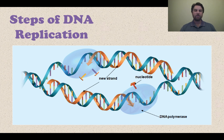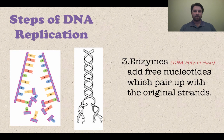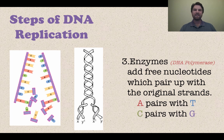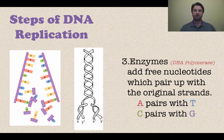Helicase unzips that double-stranded DNA. The next step is another enzyme called DNA polymerase, which is going to add free nucleotides that pair up with the original strand. We have those two original strands that have been unzipped, and now DNA polymerase comes in and starts adding the A's, T's, C's, and G's to each of those original strands to make a copy. DNA polymerase pairs the A with the T and the C's with the G's, as you can see in the picture.